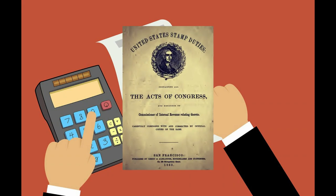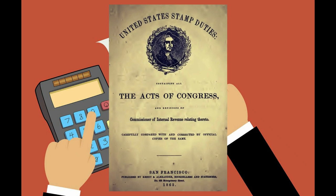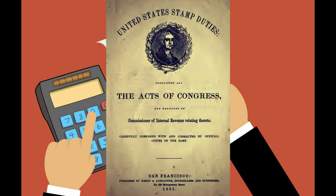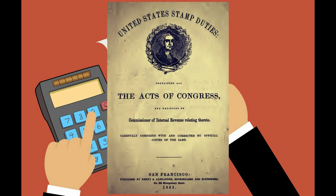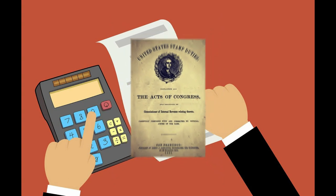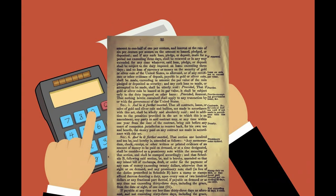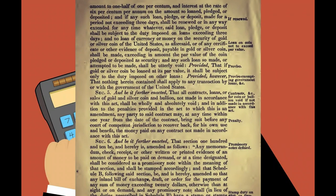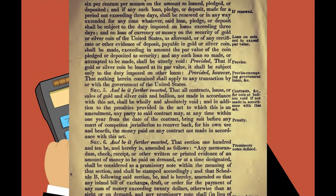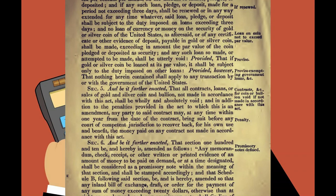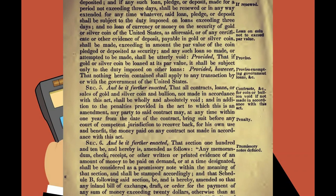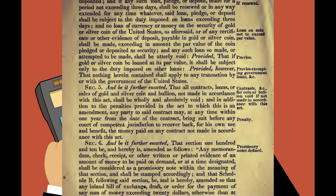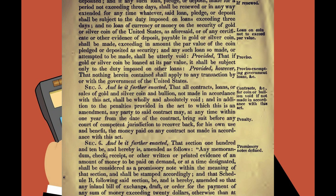We're going to look exactly how this debt was imposed in the United States stamp duties containing all the acts of Congress and decisions of the Commissioner of Internal Revenue relating thereto. Under Section 5, it states, and be it further enacted, that all contracts, loans, or sales of gold and silver coin and bullion not made in accordance with the act shall be wholly and absolutely void. In addition to the penalties provided in the act to which this is the amendment, any party to said contract made at any time within one year from the date of the contract can bring suit before any court of competent jurisdiction to recover back for his own use and benefit the money paid on any contract not made in accordance with the act.